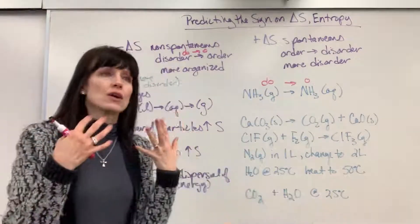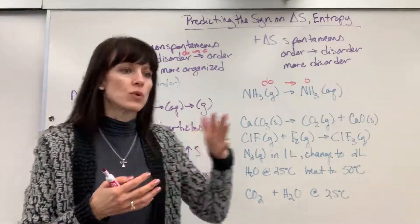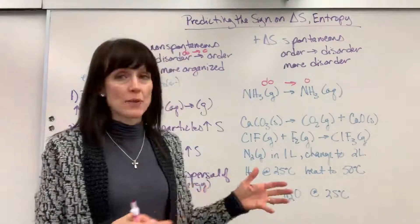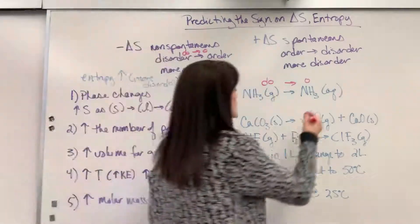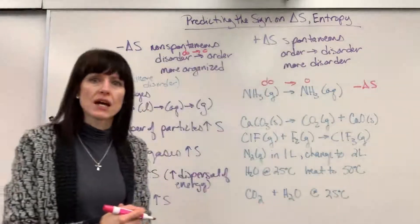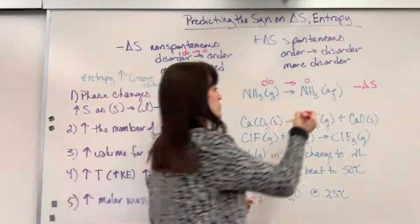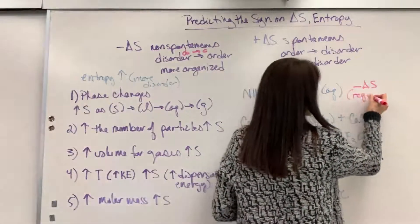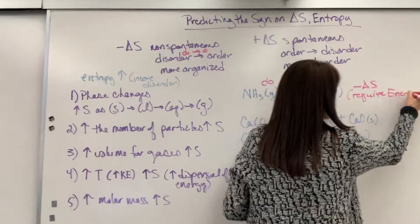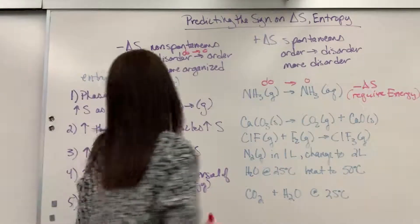And then I think, okay, disorder to order, that's more organized, definitely requires energy. It doesn't happen naturally, not spontaneous. And so that sign is a negative delta S. Negative delta S requires energy. I'm going to put that in parentheses. This is going to require energy.